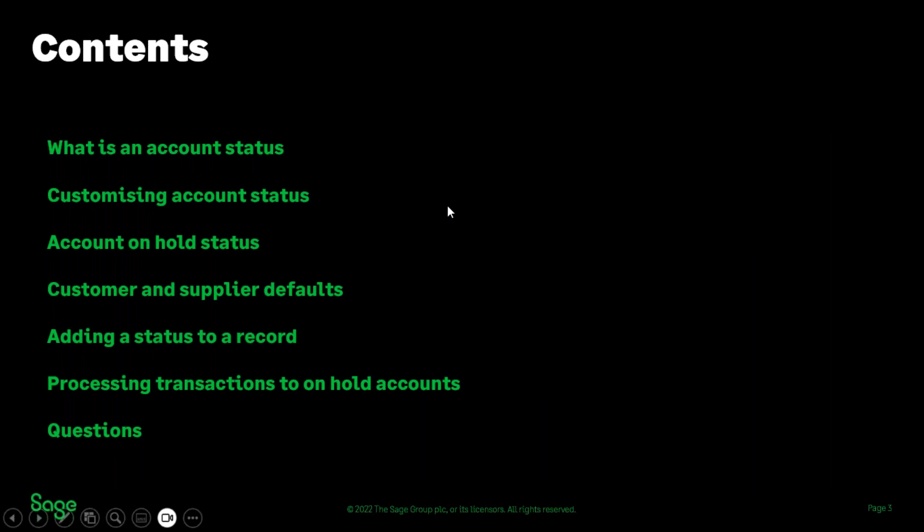First of all we're going to look at what an account status is, and I'm going to show you how you can customize your account statuses. Then we're going to look at the account on hold status and how that works in the software. I'll show you customer and supplier defaults, how to add a status onto a record, and then finally processing transactions to an account that has an on hold status.